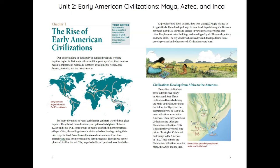Over time, animals were used for more than food in some regions. They helped people plow and fertilize the soil, supplied milk, and provided wool for clothes. As people settled down to farm, their lives changed. People learned to irrigate fields and developed ways to store food. Populations grew. Between 4,000 and 2,000 BCE, towns and villages in various places developed into cities. People constructed buildings and worshipped gods, made pottery and wool cloth, chose leaders, and developed laws. Some people governed and others served. Civilizations were born.